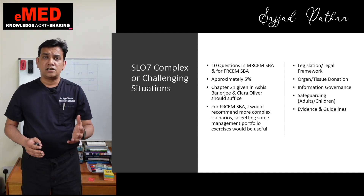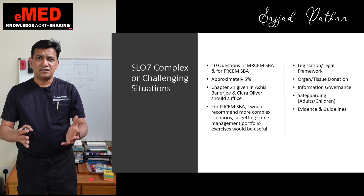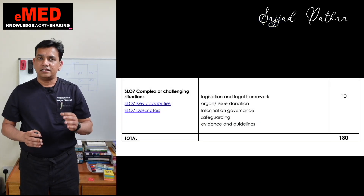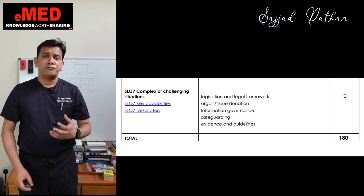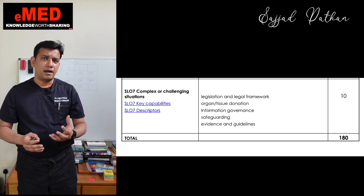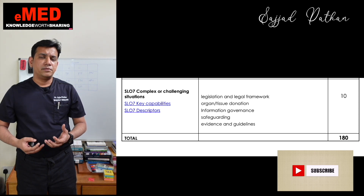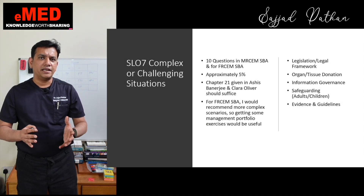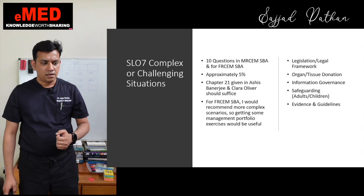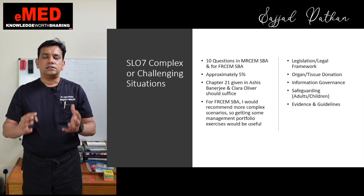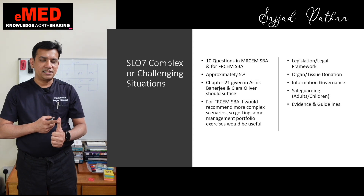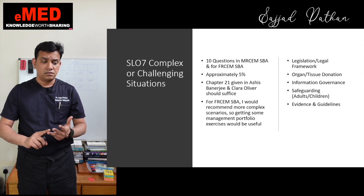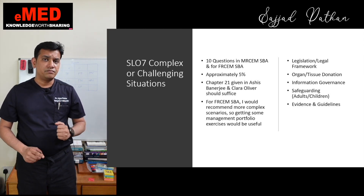Approximately these 10 questions out of 180 means about 5%, and what you need to read is the 10 to 15 pages given in the Ashish Banerjee book as the legal aspects of emergency medicine. For those appearing for the FRCEM final examination, I would ask them to reflect more on the management portfolio aspect and deal with more challenging situations, but for the MRCEM intermediate that much information should suffice. SLO7 consists of: legislation and legal framework, organ tissue donation, information governance, safeguarding of adults and children, and evidence and guidelines.